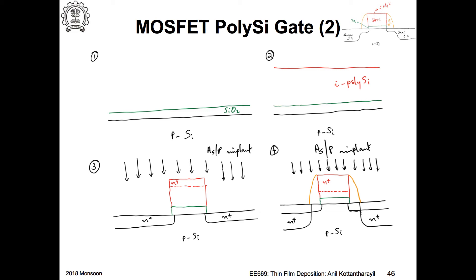The implant is N-type, so I do the implantation. I have a junction that is formed which is shallow, and then I would dope the polysilicon also N-type. Subsequent to this I am going to form the spacer — typically silicon nitride. After forming the spacer, I do one more ion implantation, again of N-type dopants — typically arsenic. For N-type dopants you have the option: you can use phosphorus or arsenic. So you have the process sequence.